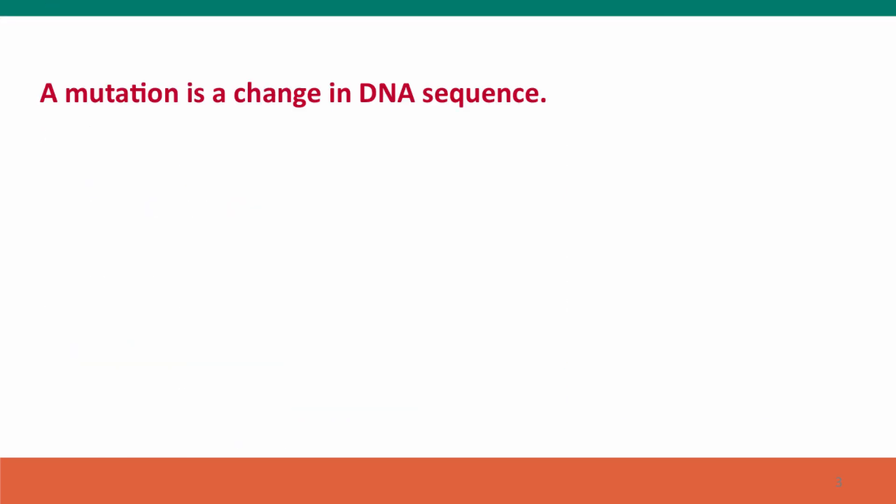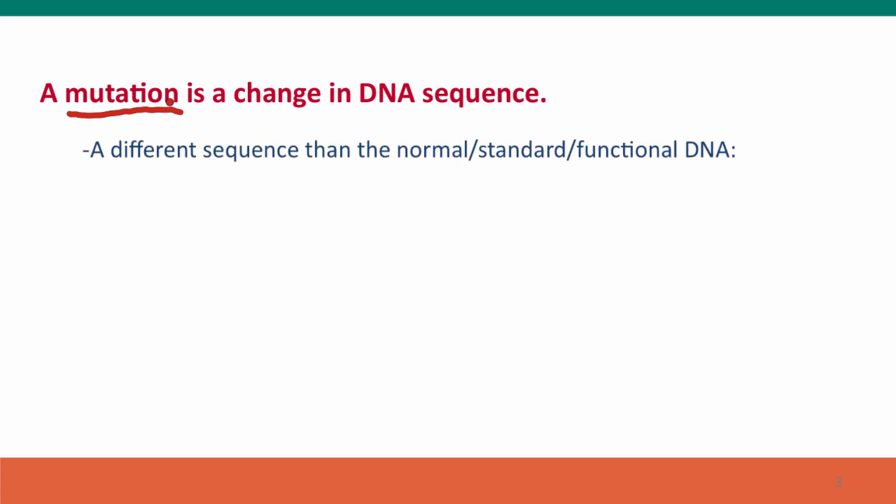The basic definition is that a mutation is a change in DNA sequence. We can clarify that by describing some constraints on this. First, the DNA sequence has to have become different — different than the normal, standard, functional DNA sequence for that organism, usually different than the sequence that was there before.